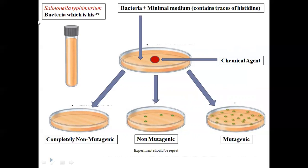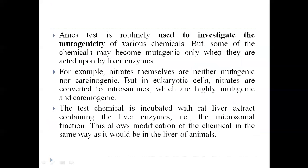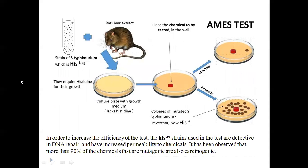To check whether any chemical has a mutagenic effect, bacteria from the histidine-negative mutant are plated on minimal medium. If a chemical is mutagenic, it will reactivate and repair the mutated histidine gene, so the bacteria can synthesize histidine and develop colonies. If the chemical is non-mutagenic, no colonies will appear. Finding colonies means the chemical is mutagenic.